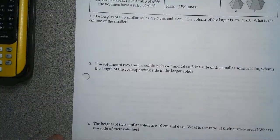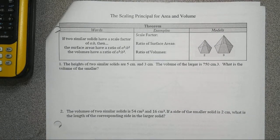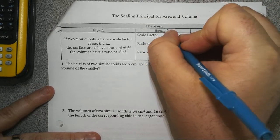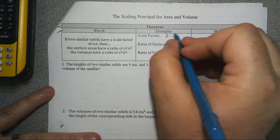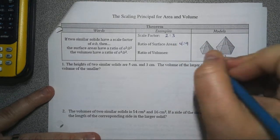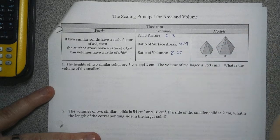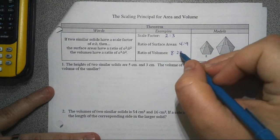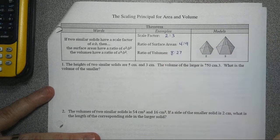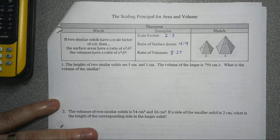The next part is the scaling principle for area and volume. If two similar solids have a scale factor of a to b — say, 2 to 3 — then the ratio of their surface areas is squared, giving 4 to 9, and the ratio of their volumes is cubed, giving 8 to 27. Squared for areas, cubed for volumes. To go backwards, use square root or cube root. Always find the scale factor first.